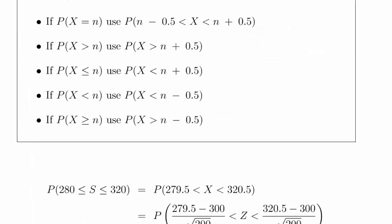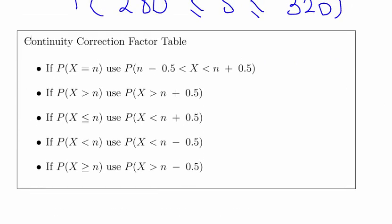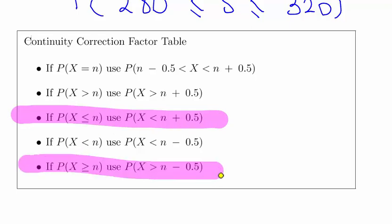What we have to use here is a continuity correction factor. Essentially, what we're dealing with is X as a discrete random variable, where S is assumed to be normally distributed, or we're approximating it using the normal distribution. What we are going to do here is use this one and this one to come up with continuity correction factors.